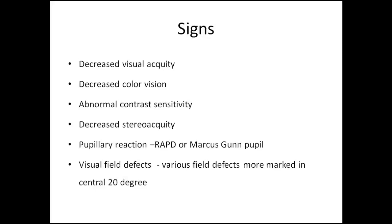Visual field defects are more marked in the central field. The visual loss can be subtle or profound — there may be complete blindness in some patients. It is usually unilateral but can also be bilateral. Typically it affects people between 18 and 45 years of age. There could be orbital, retroorbital, or brow pain usually aggravated by eye movements, especially in retrobulbar neuritis.